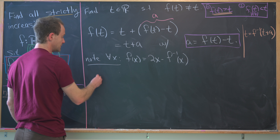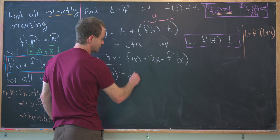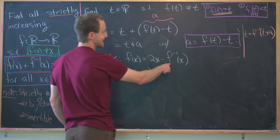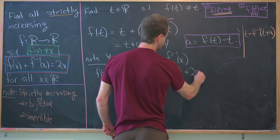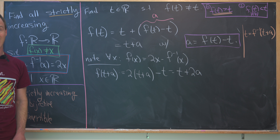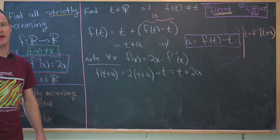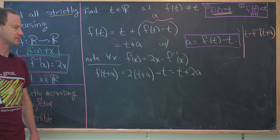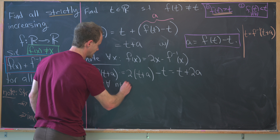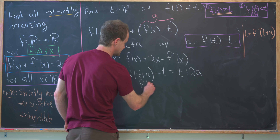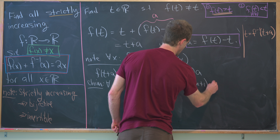Plugging in, f(t + a) = 2(t + a) minus f inverse of (t + a), but that's just t, so we get t + 2a. Doing this again, f(t + 2a) = t + 3a. This sets up a pattern, so we claim that for all natural numbers n, f(t + na) = t + (n+1)a.